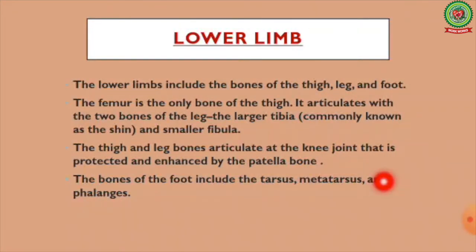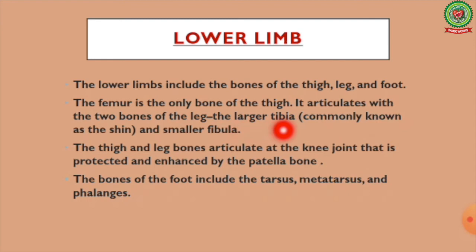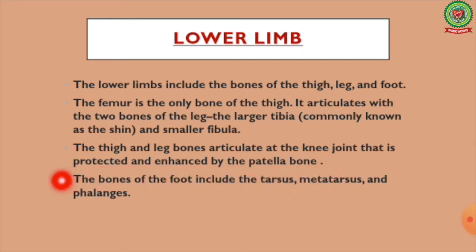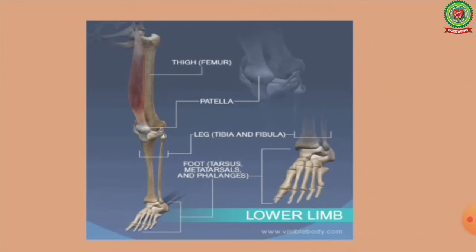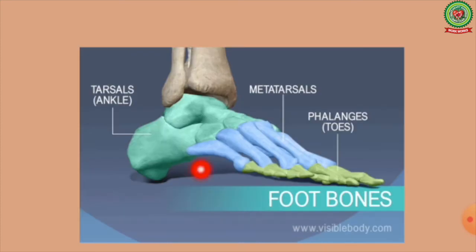The lower limbs include the bones of the thigh, leg, and foot. The femur is the only bone of the thigh; it articulates with the two bones of the leg — the larger tibia (commonly known as the shin) and the smaller fibula. The thigh and leg bones articulate at the knee joint, protected by the patella bone. The bones of the foot include the tarsus, metatarsus, and phalanges.